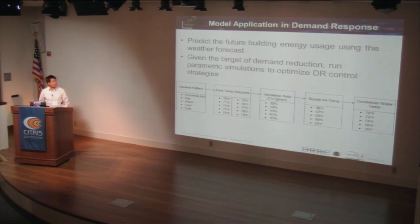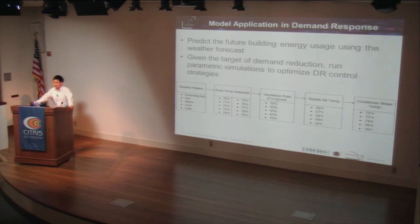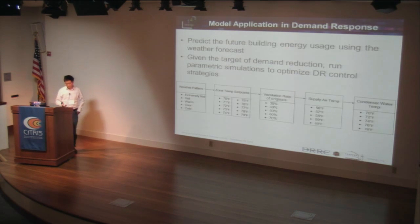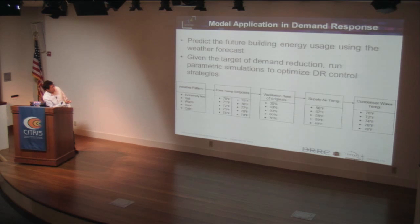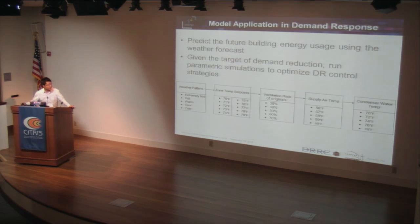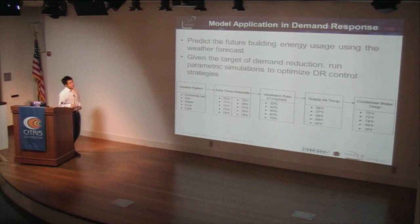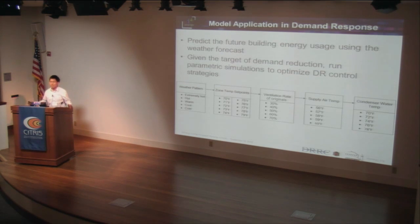Once we finish the model calibration work, we use the model to predict future building energy usage using the weather forecast from the Smart Air box. Given the target of demand reduction, we run parametric simulations to optimize the demand response control strategies. The parameters include weather patterns, zone temperature set point, ventilation rate, supply air temperature, and condensing temperature. All these different parameters combine into a large matrix, and the simulation model runs those different combinations to find the optimal control strategies to achieve our target.